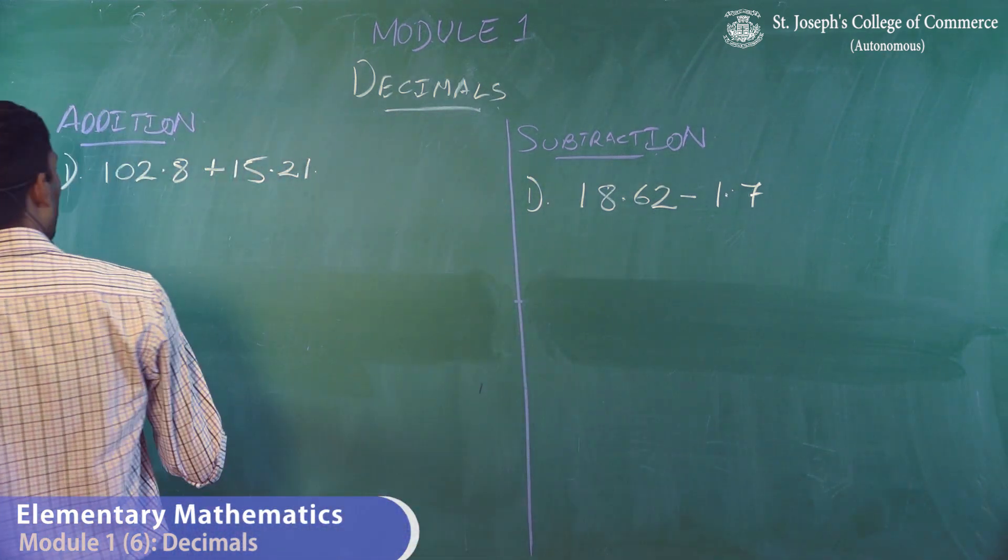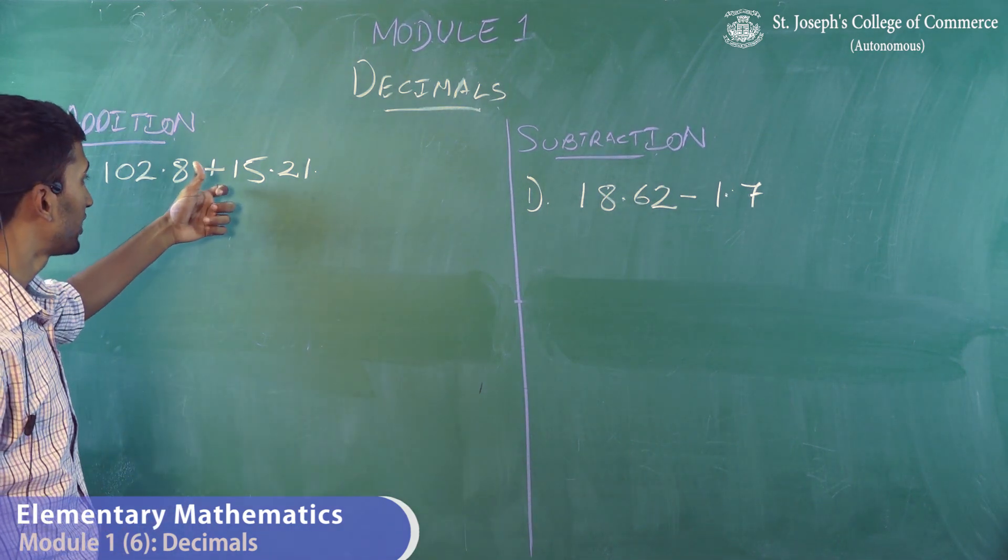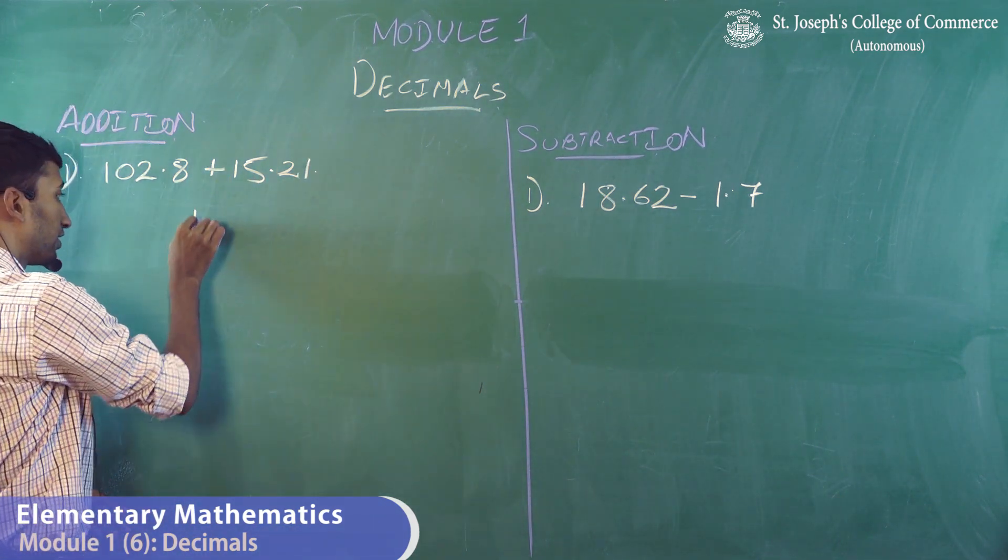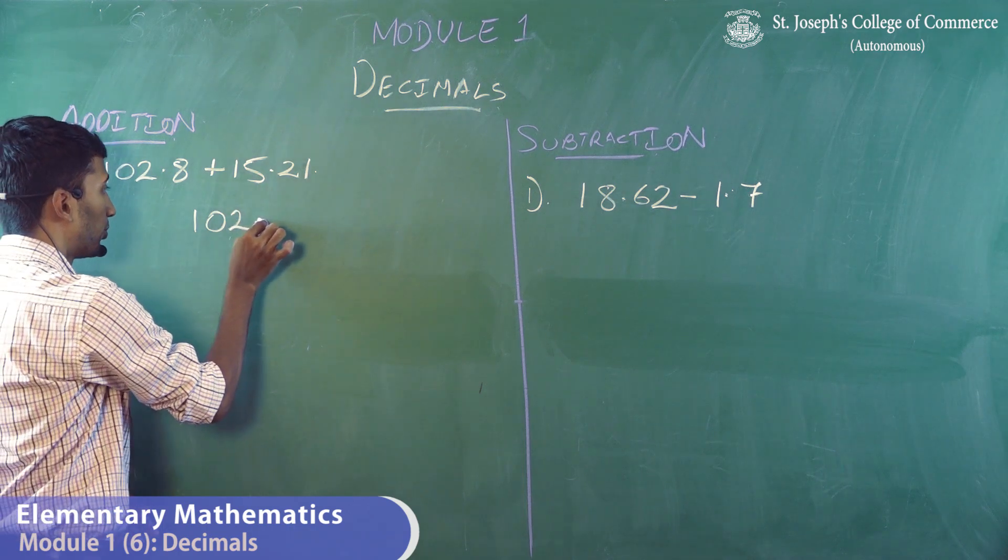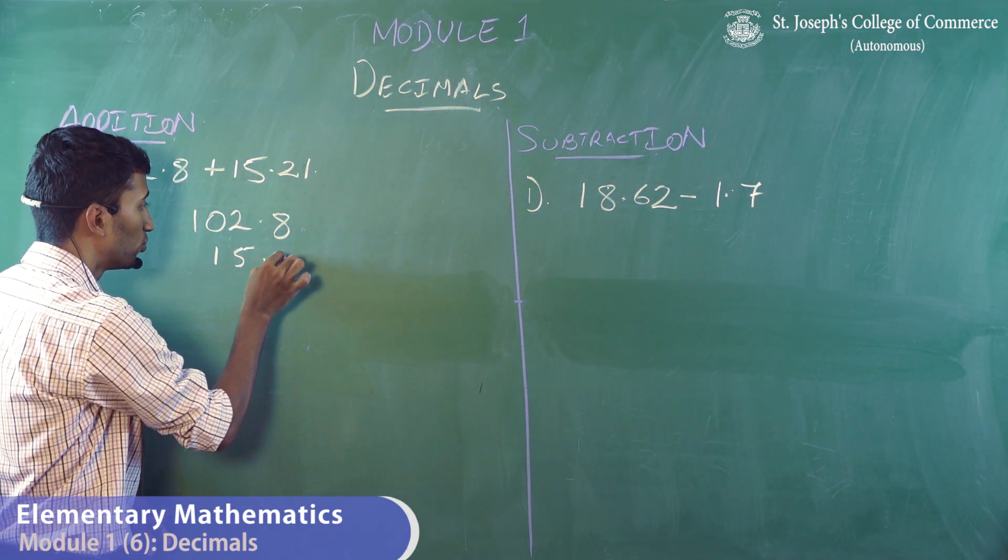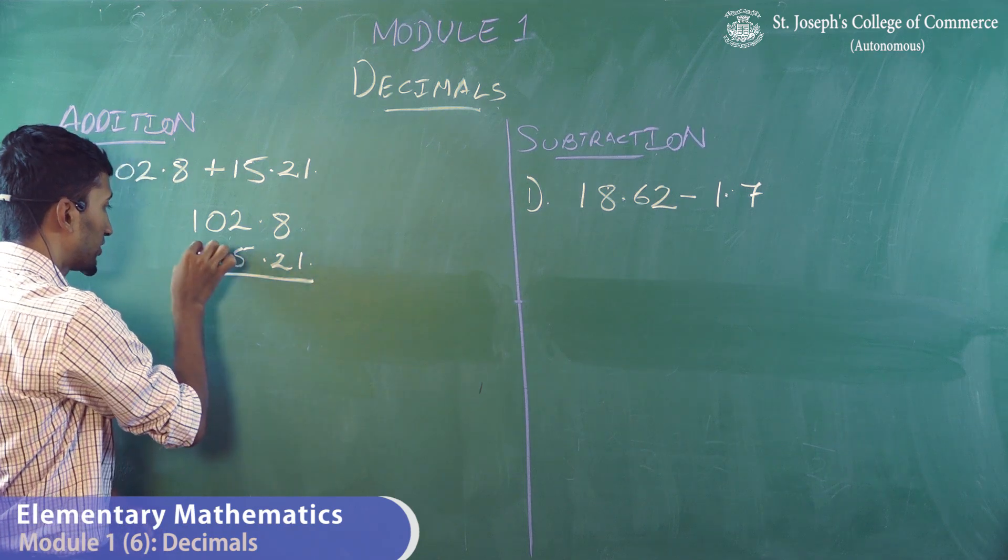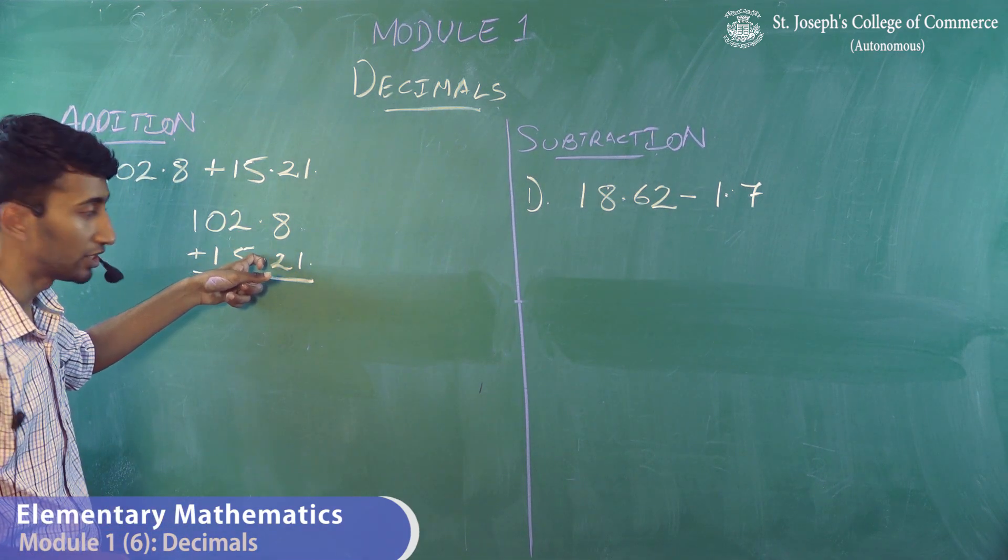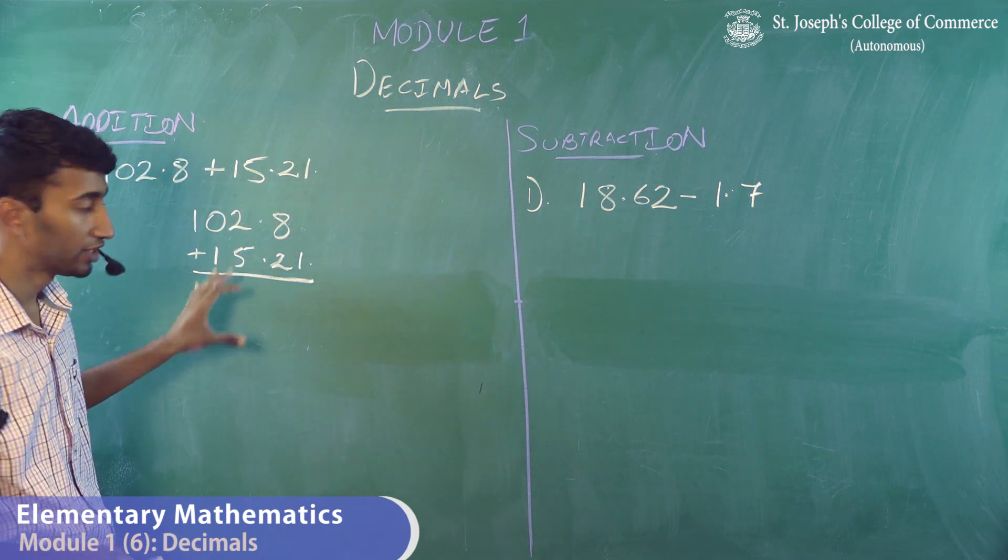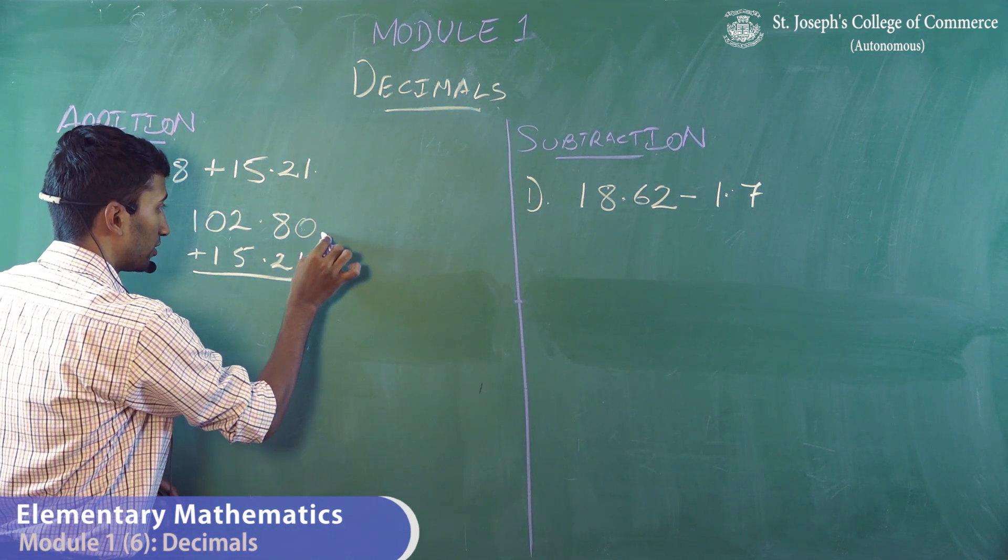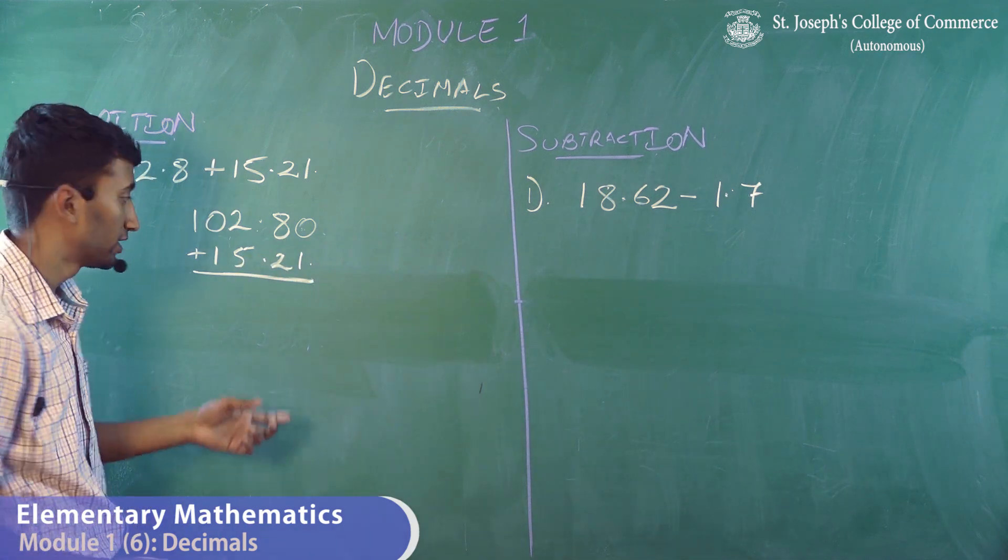Addition of 102.8 plus 15.21 is the normal addition method, that is 102.8 and 15.21. Just as you can see, try to keep the decimal points under each other so that you can align the whole addition method. I can write 8.80, it does not make a difference.